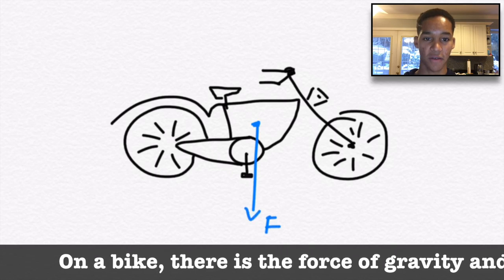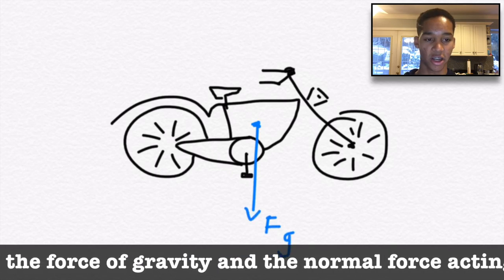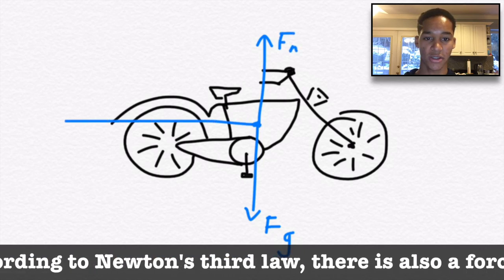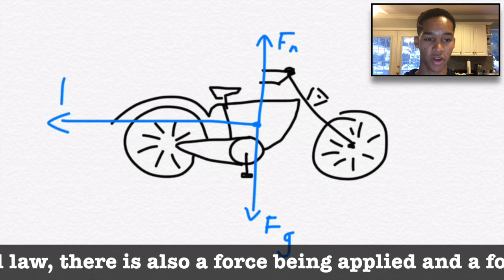On a bike, there is the force of gravity and the normal force acting on it. According to Newton's Third Law, there is also a force being applied and a force reacting on the bike.